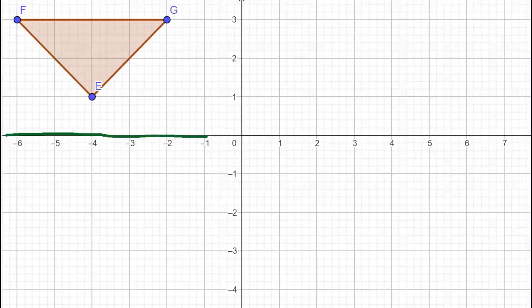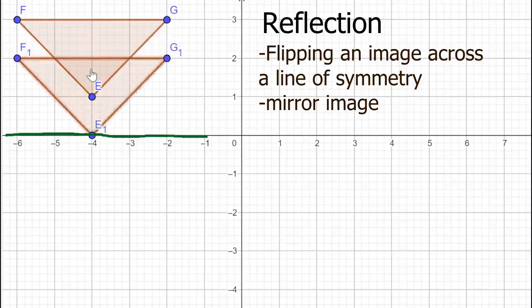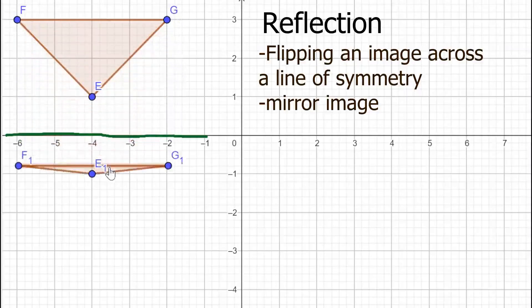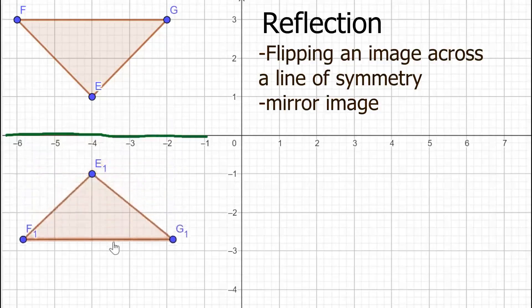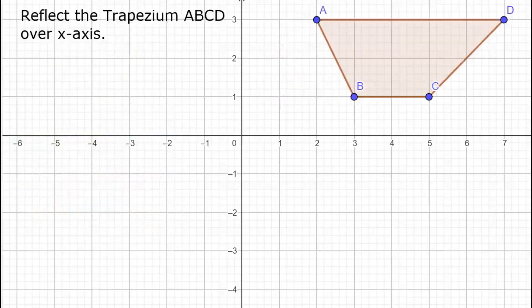Welcome back to my Wizard Tutor. Today's video is about transformational geometry, and I'll be discussing reflection. Reflection is just flipping the image across the line of symmetry — like you're facing a mirror. For example, we have triangle EFG. I will move the figure just below the line of symmetry so it has the same distance from the line of symmetry, then flip it. The image is now reflected.